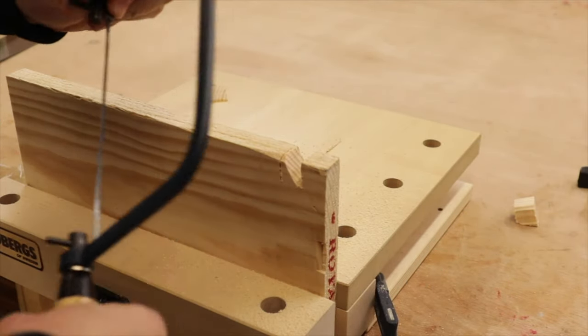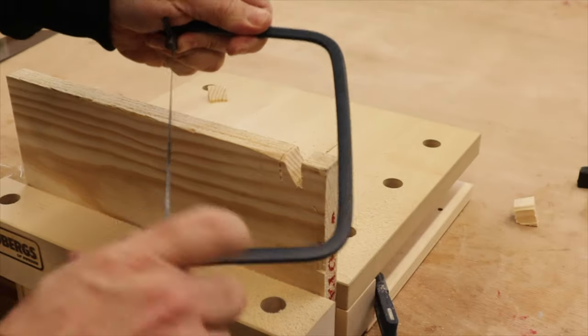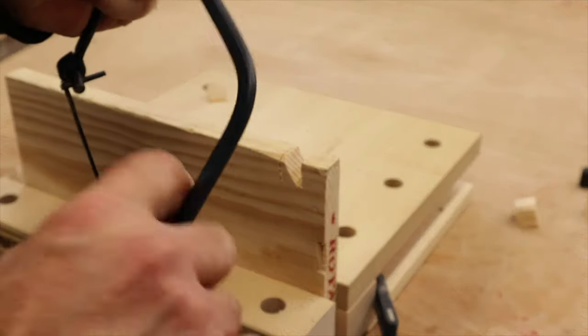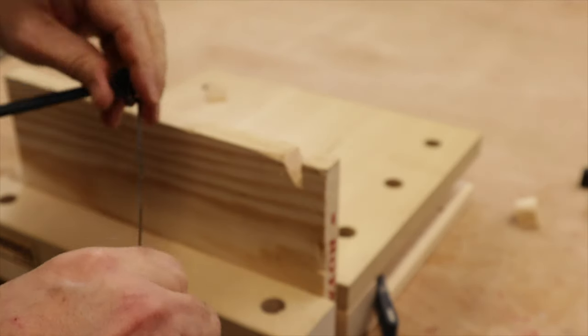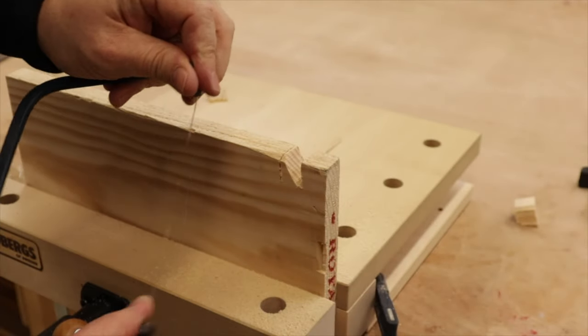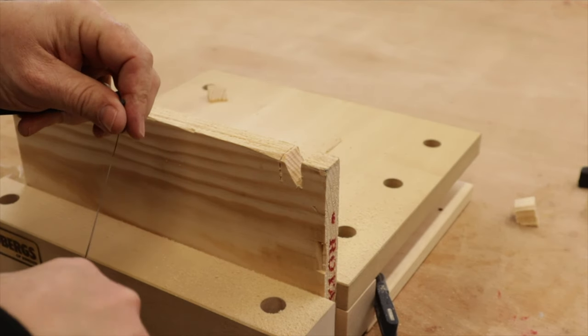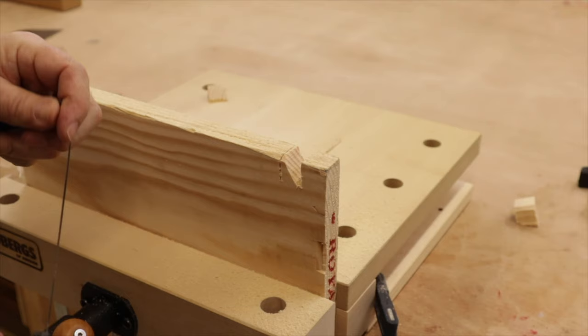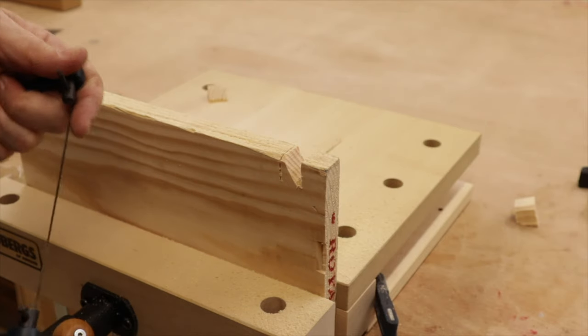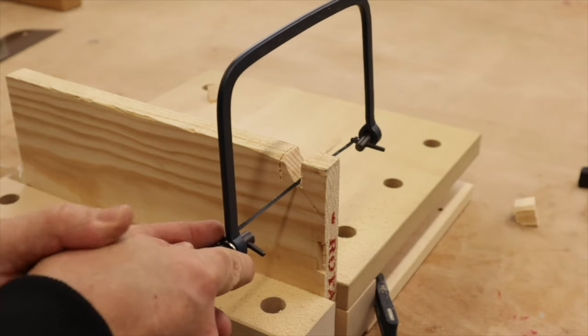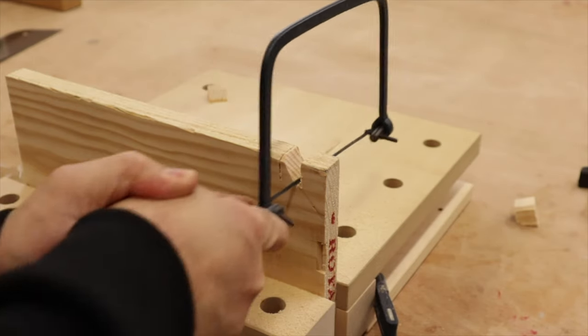Now my blade's angled the wrong way to do that, so I'm just going to undo the handle, like I showed you earlier, twist this all the way around, tighten the handle back up. Great, and now it's facing the right way. So now I can get right into this slot here, and come across and remove the waste.